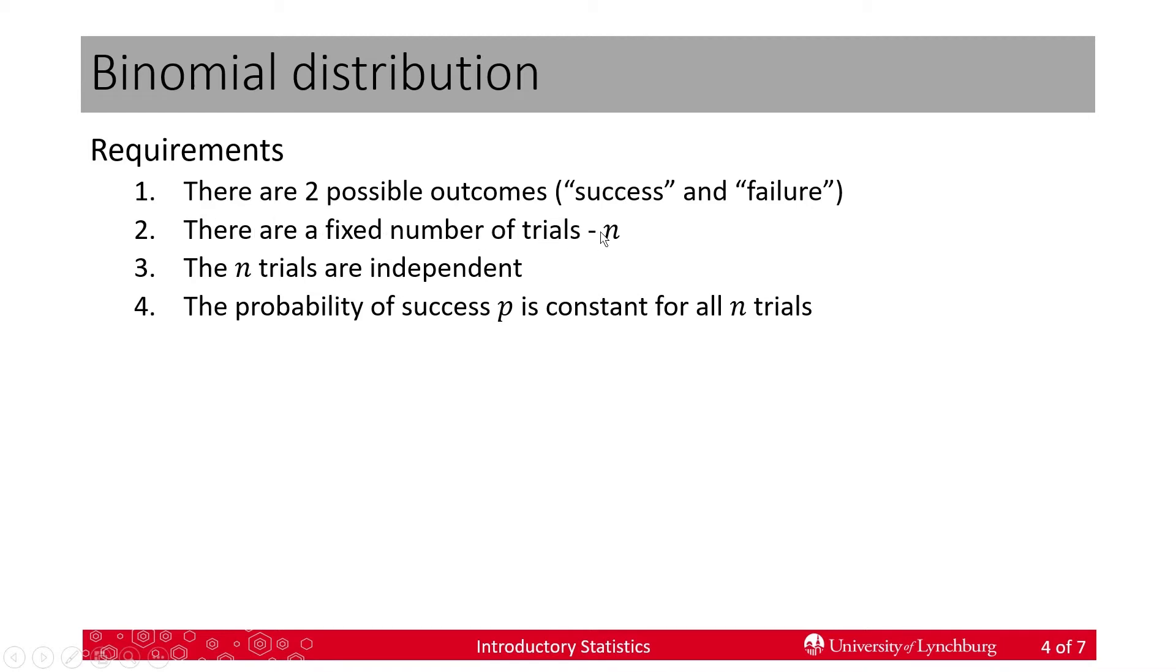There has to be a fixed number of trials. In other words, it can't be like the geometric distribution where we're waiting for the first success. We're saying we're going to do something so many times or we take a sample of n and it's fixed. It doesn't change for that time. And then the n trials have to be independent. If they're independent, that means the probability that occurs on one versus the other trials, they don't affect each other. That means that the probability of success, which is denoted by little p, is constant for all n trials.